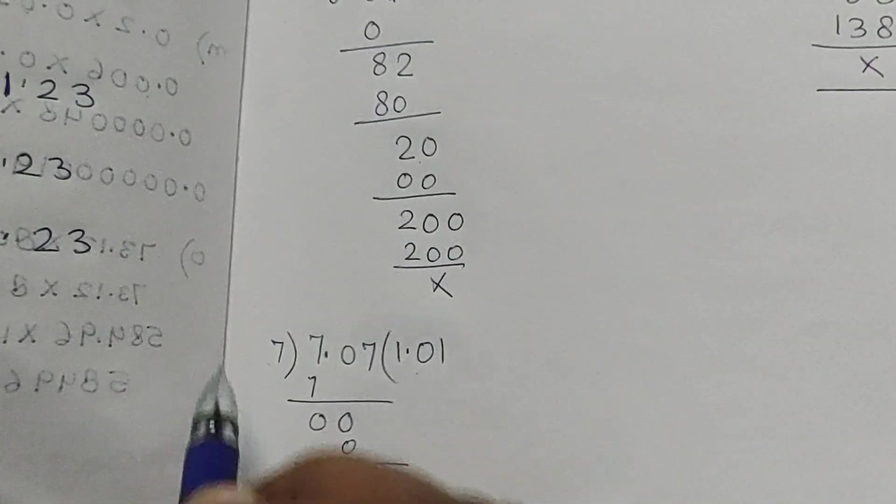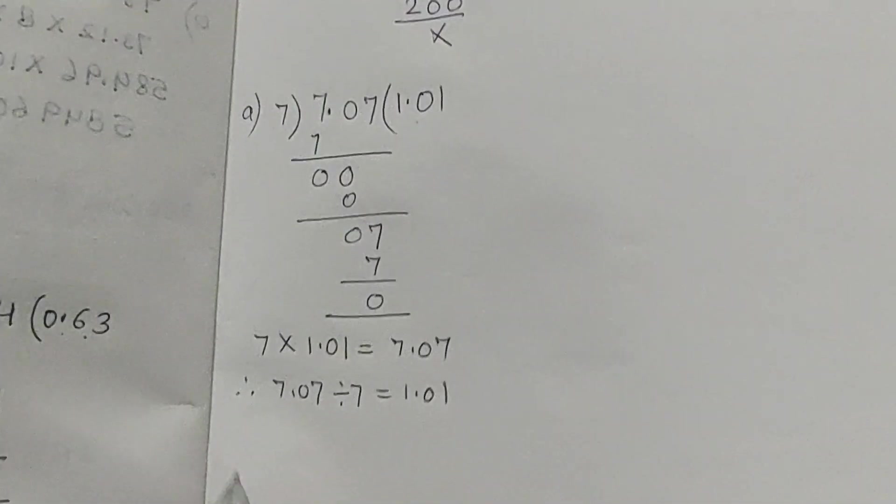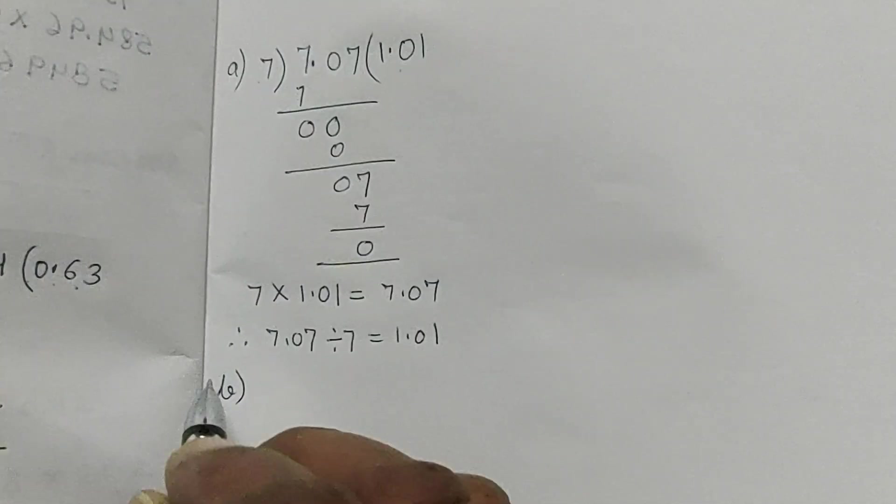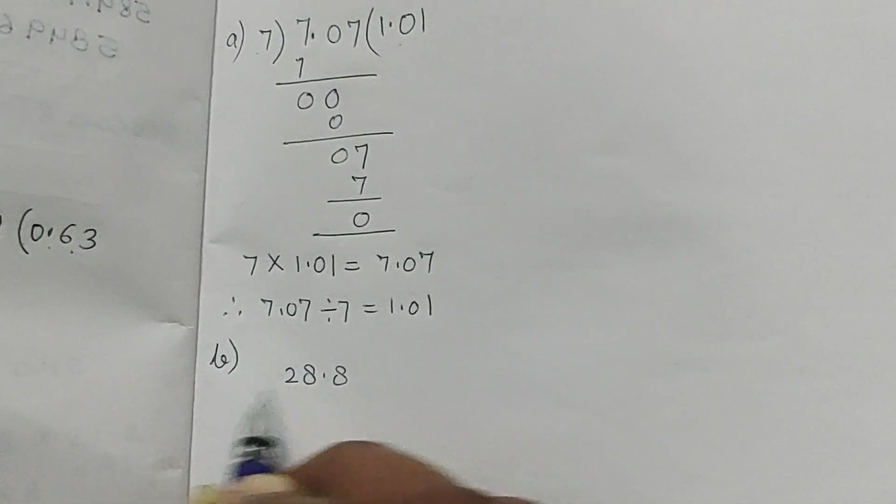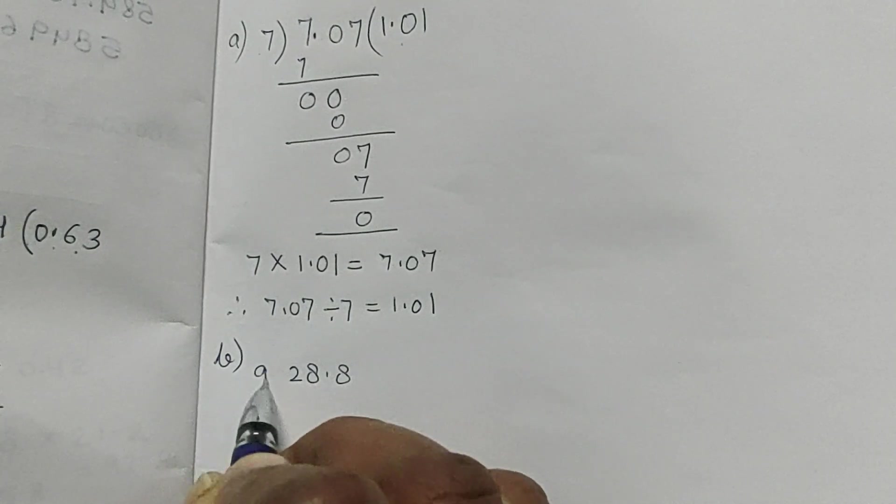Now part B. This was part A. Now part B is 28.8 divided by 9.